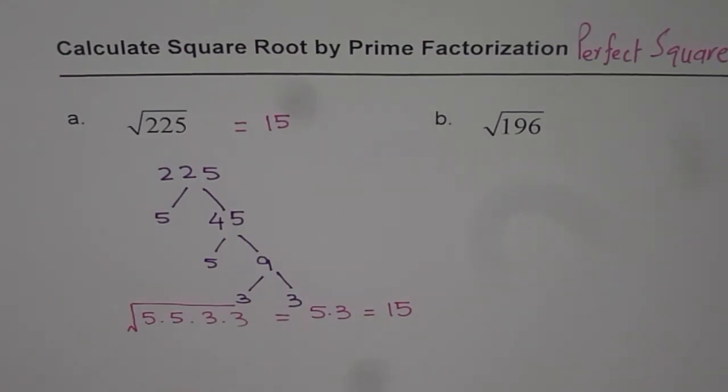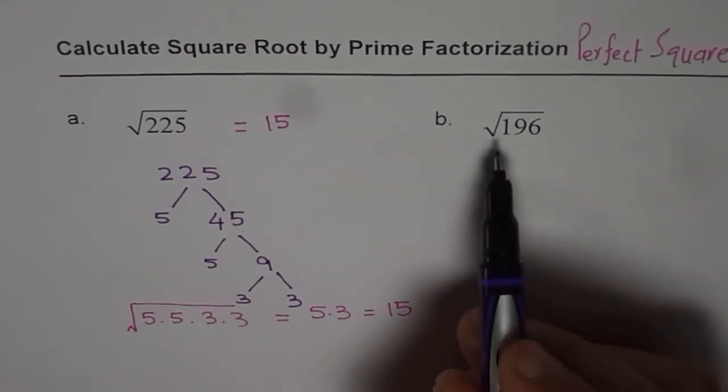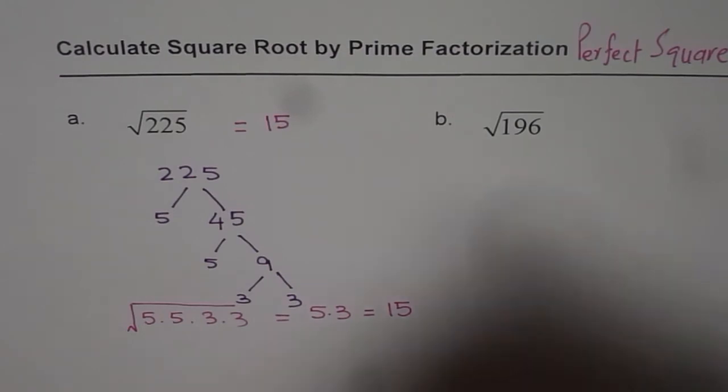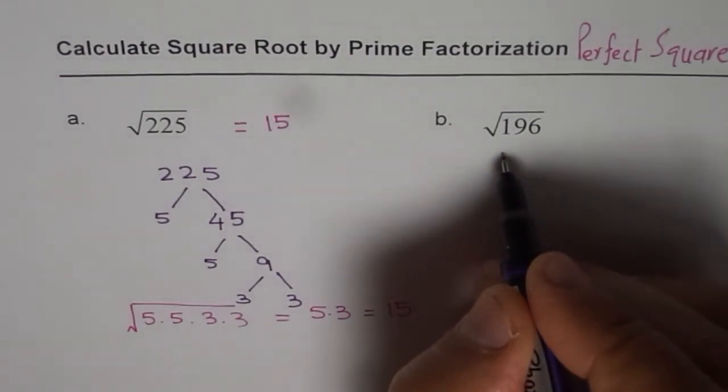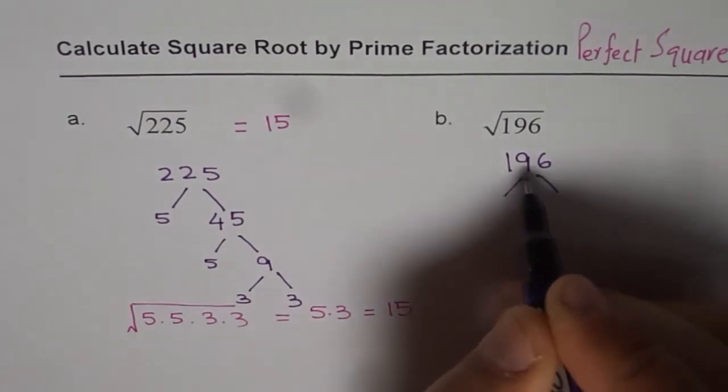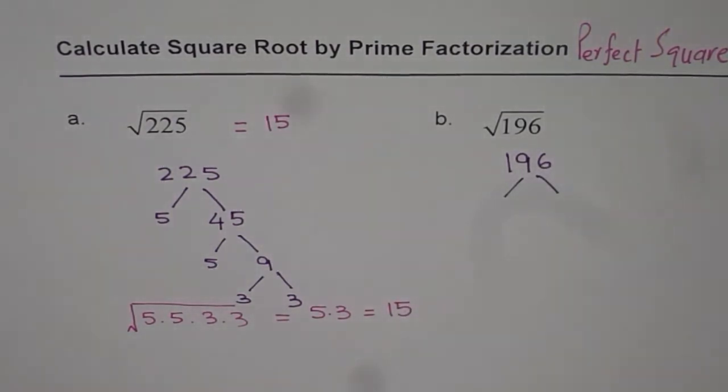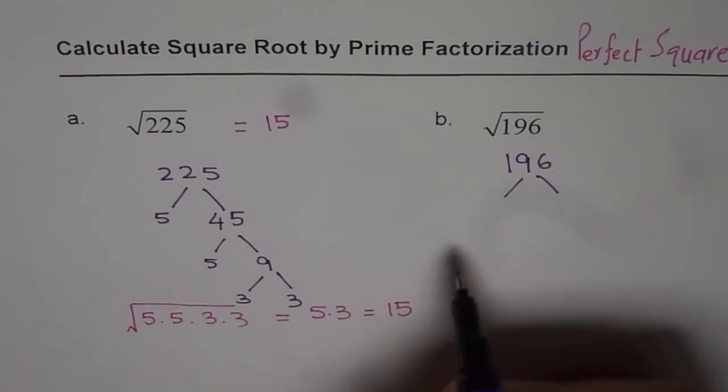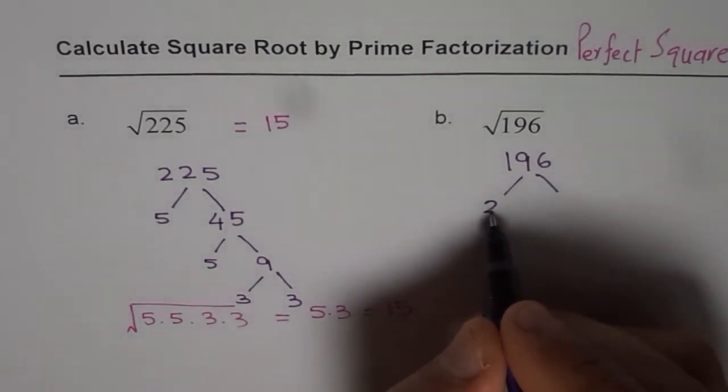Let us repeat this process for 196 also. Let's do prime factorization. 196 is an even number, so let us divide it by 2.